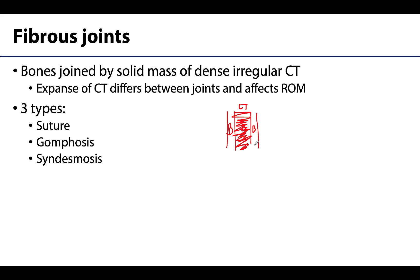In the case of fibrous joints, the connective tissue present is dense irregular connective tissue. How much of that dense irregular connective tissue is between the bones differs between the different types of fibrous joints — sometimes it can be really short, and sometimes you can have longer sheets of connective tissue.